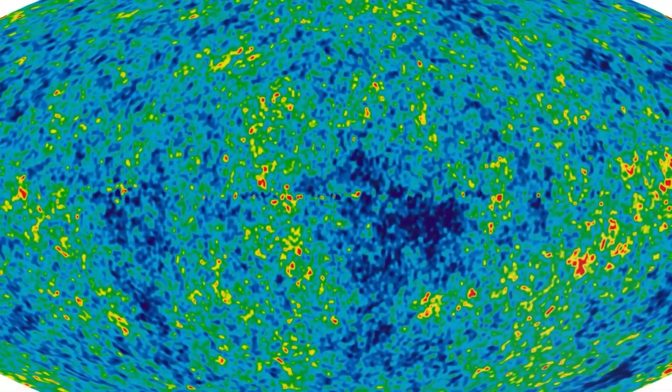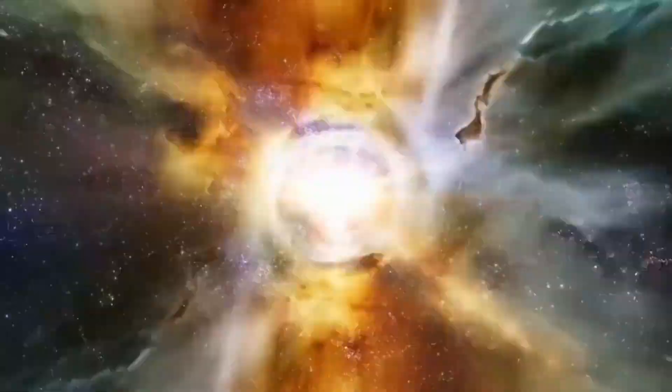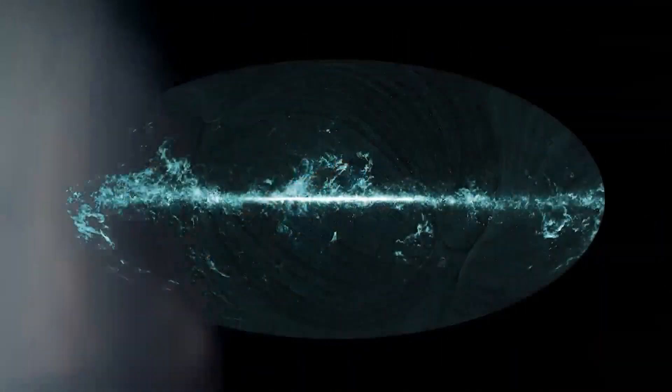Webb's images are so sharp, so detailed, that a few researchers are noticing oddities. Some patterns seem to shift slightly depending on how the data is processed. It's subtle, barely there, but enough to make you wonder. Are we just seeing the past? Or are we somehow part of it?